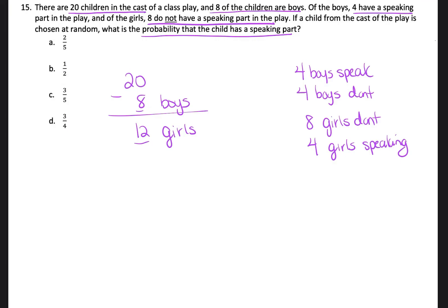Now, if I calculated these numbers correctly, 4 plus 4 plus 8 plus 4 should equal 20 total children. And because it did, I know that I have the right numbers here.